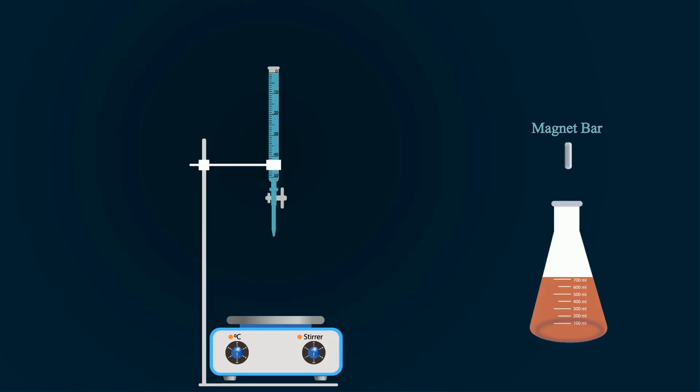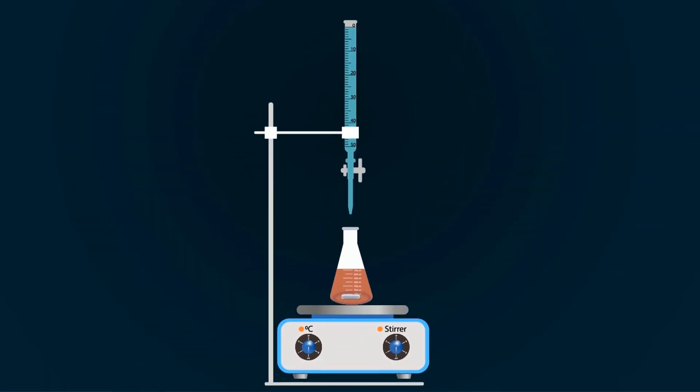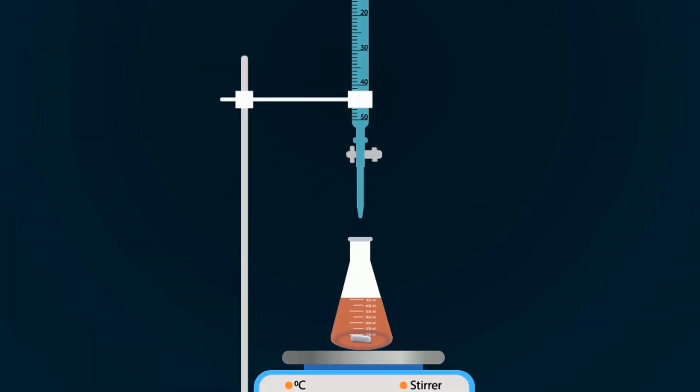Add magnet bar into the conical flask for continuous mixing and place the flask onto the magnetic stirrer. Now start titration. For this, you will have to loosen the loop so that it will come into the solution drop by drop. Add EDTA solution until the solution color turns into bluish purple.